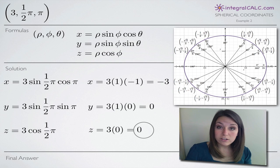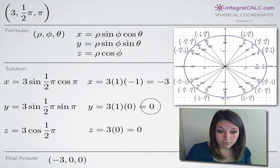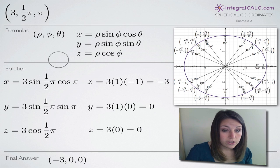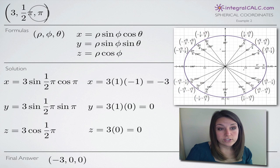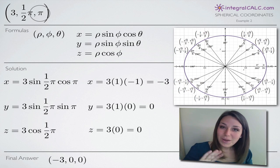So finding the rectangular or Cartesian coordinates, we simply put all three of them together and our rectangular coordinate will be negative 3, 0, 0. And this is exactly equivalent to the spherical coordinate 3, pi over 2, pi. So I hope that helped you guys and I'll see you in the next video. Bye!